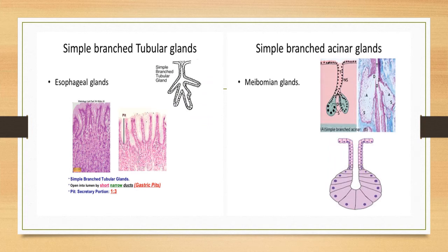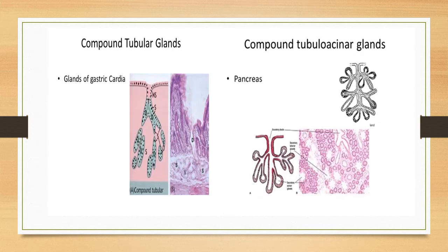Simple branched tubular glands include Brunner's glands or the esophageal glands of the duodenum. Simple branched acinar glands include the Meibomian glands, which are present in the eyelids. In compound glands, the secretory portion is tube-like, so we call them compound tubular glands because the duct is branching, as you can also see in the photomicrograph.